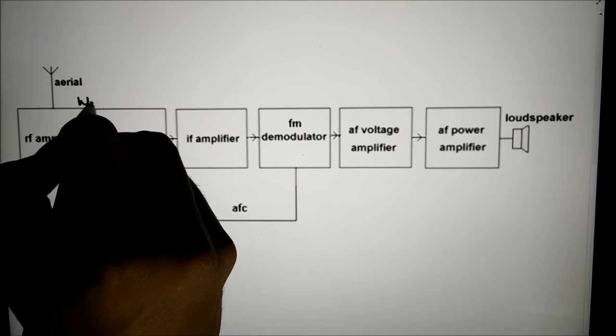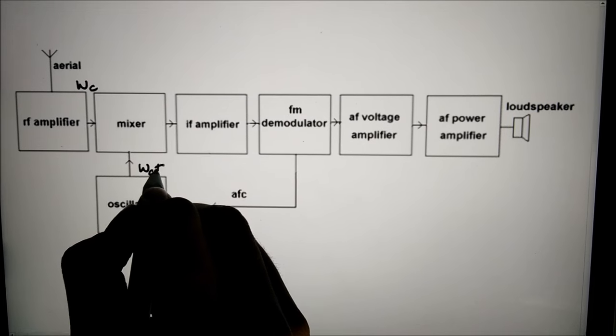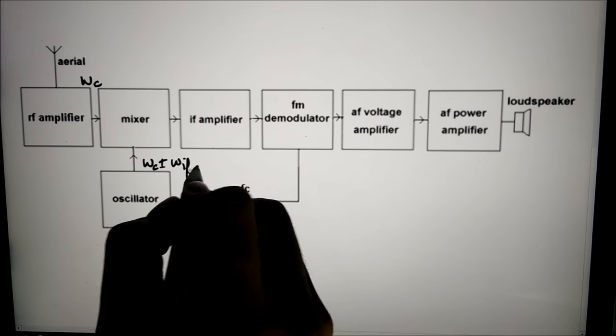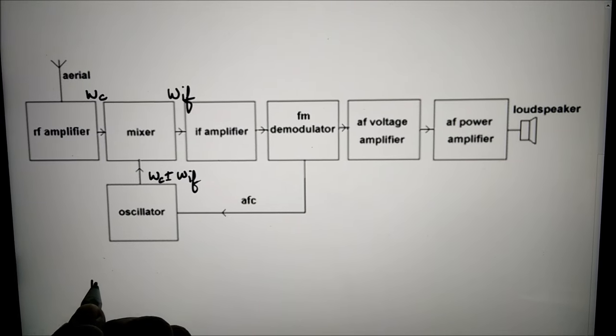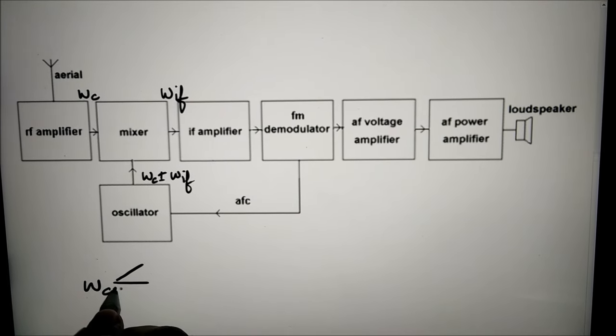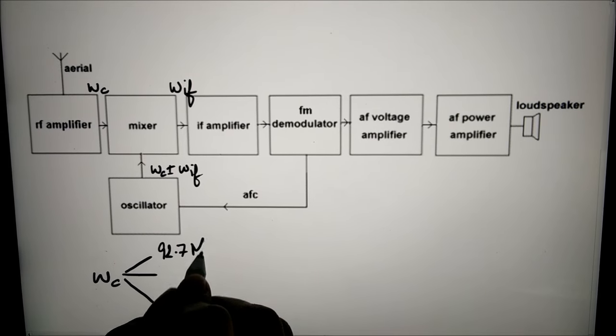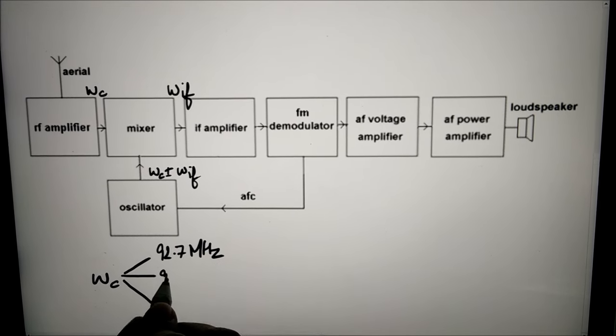The selected frequency is applied to the mixer. The output of an oscillator is also applied to the mixer. The mixer and oscillator form a frequency changer circuit. The output from the mixer is the intermediate frequency. The IF is a fixed frequency of 10.7 MHz.